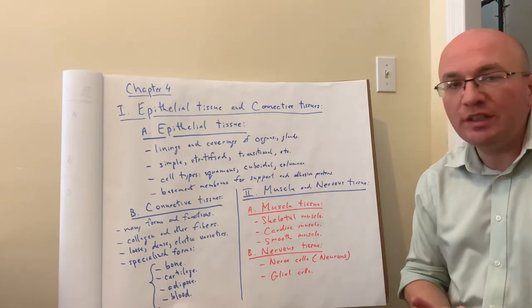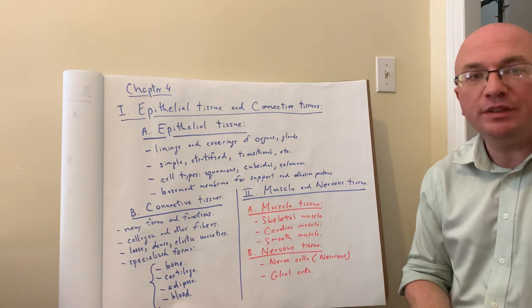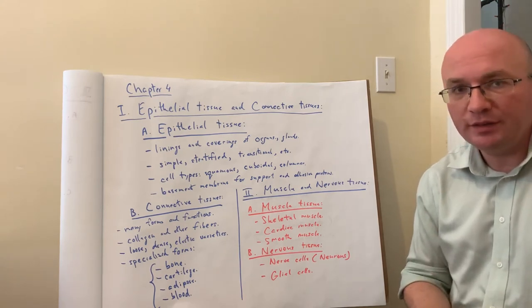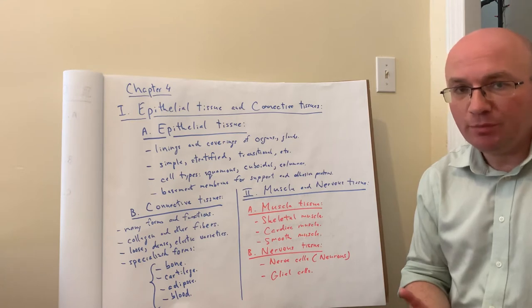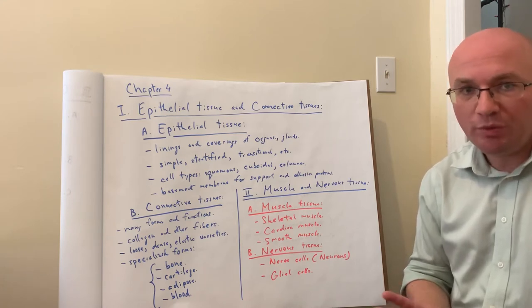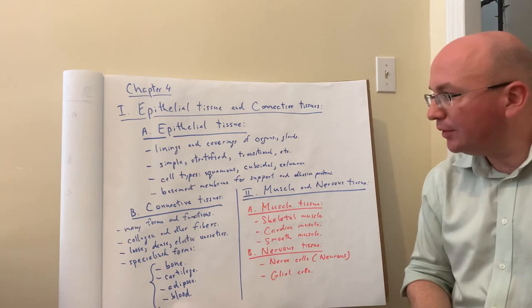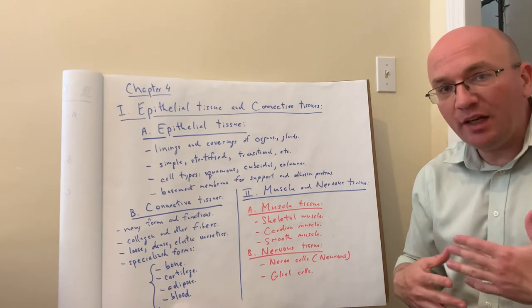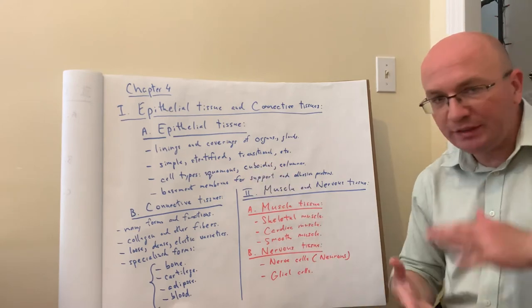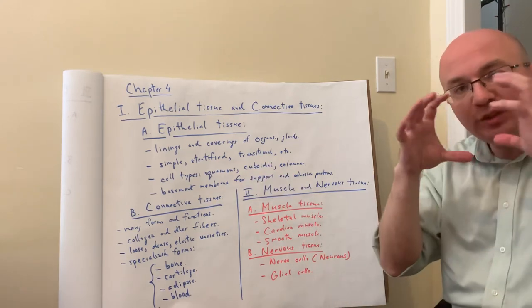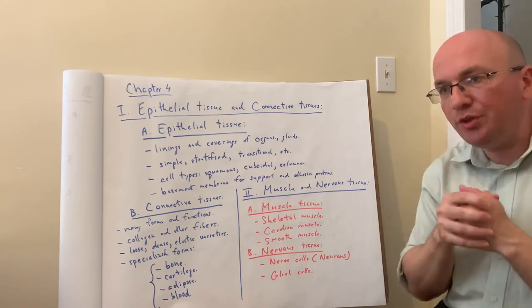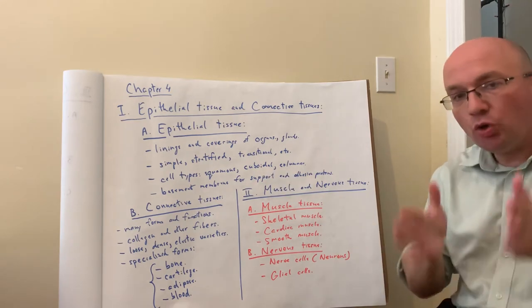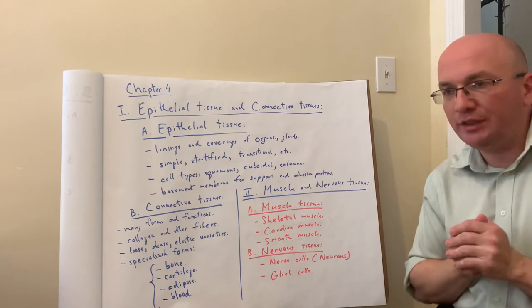Simple essentially means one layer of cells, stratified means multiple layers. Most examples we'll talk about will be either simple or stratified. What kind of cells do we have? If these are flat cells, we call them squamous cells. If they're square-like, remember a square is a cube in three dimensions, we call these cuboidal cells. If they're tall cells, we call these columnar cells.